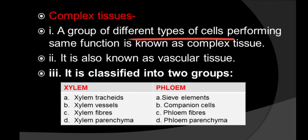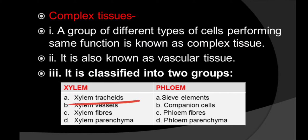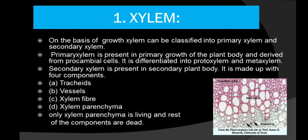Complex tissues are divided into 2: xylem and phloem. Xylem contains xylem tracheids, vessels, fibers, and parenchyma. Phloem contains sieve elements, companion cells, phloem fibers, and phloem parenchyma. Now we will move on to the xylem.